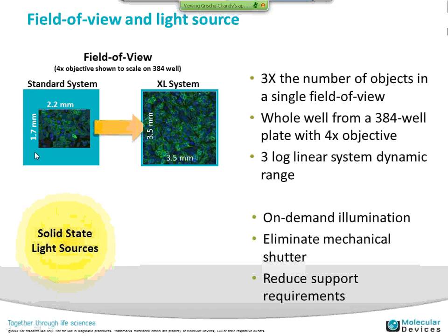The standard system, shown to scale on a 384-well plate — the standard system takes up a portion of the well at this magnification. The XL or XLS system gives you nearly the full, or sometimes bigger than the full, 384-well field of view. That allows you to see three times the number of objects in a single field of view — whole well from a 384-well plate with a 4X objective, with high dynamic range from the sensor.